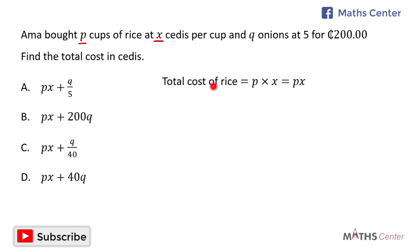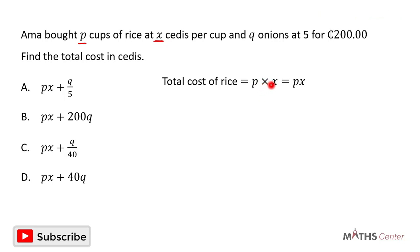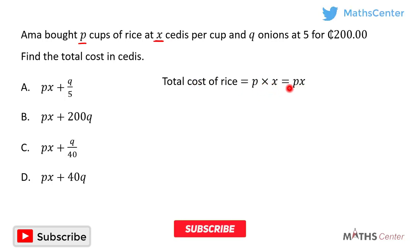The total cost of rice will be the number of cups of rice she bought, which is p, times the cost of each cup, which is X. That gives us p times X, which is PX. So the total cost of the rice is PX.